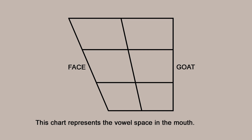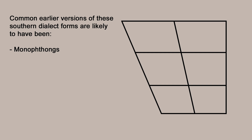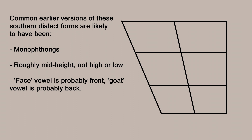These vowels are roughly mid-height in all the dialects where they're monophthongs — not the highest vowels, not the lowest. They also start off mid-height in dialects where they're diphthongs. You might hear a northern speaker saying monophthongs which are again mid-height. So we would reconstruct these as mid-height monophthongs: the face vowel probably at the front of the mouth, the goat vowel probably at the back — something like 'face' or 'goat'.